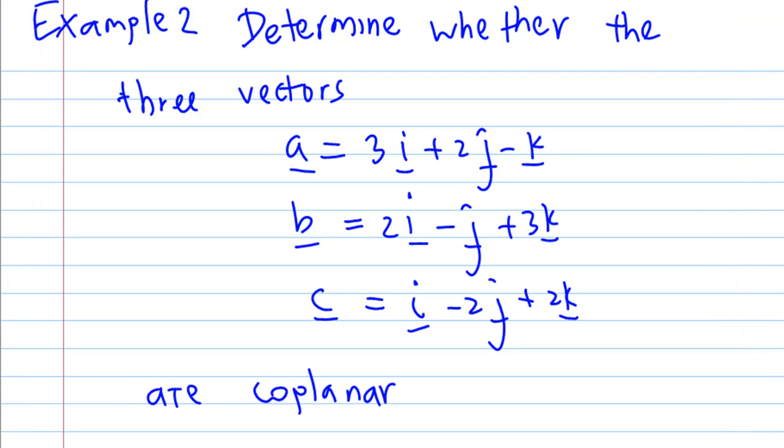This is an example to determine whether three vectors a = 3i + 2j - k, b = 2i - j + 3k, and c = i - 2j + 2k are coplanar.